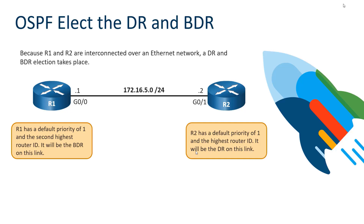In the two-way state, an election occurs for a designated router (DR) and backup designated router (BDR). This election only occurs on multi-access networks, such as Ethernet. Routers have a default priority of 1 on their links, and since both priorities are defaulted at 1, it's a tie. The tiebreaker goes to the highest router ID. R2 has 172.16.5.2, which is higher, so R2 becomes the DR. R1 has 172.16.5.1 — the lower router ID — making it the BDR.